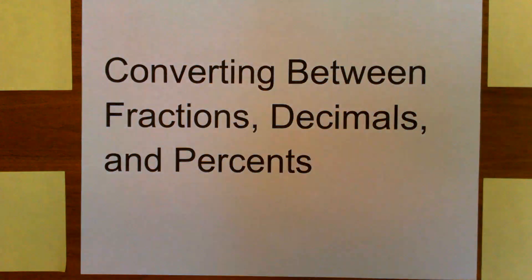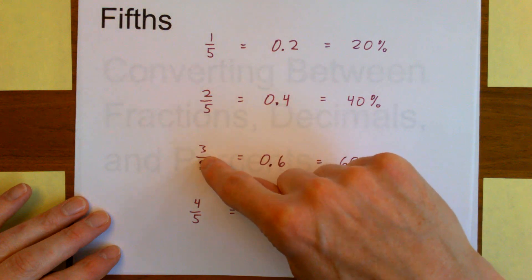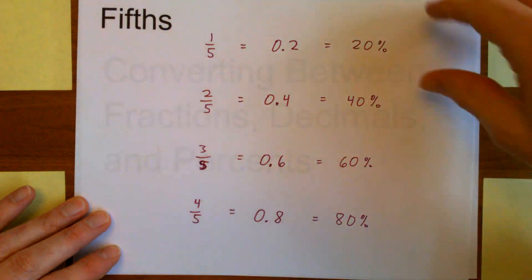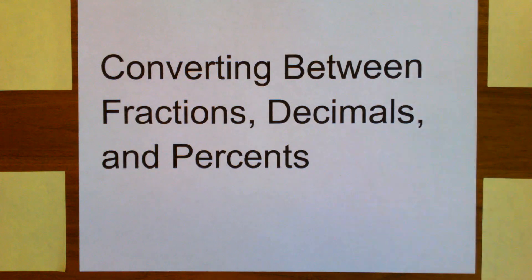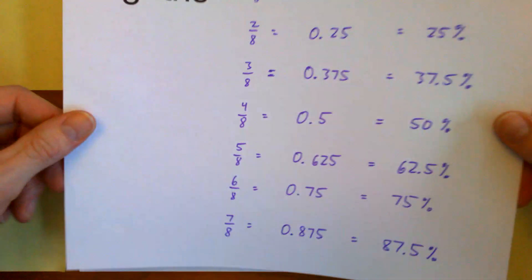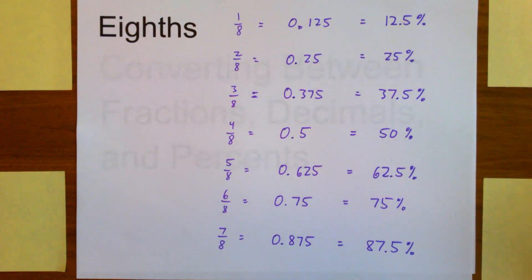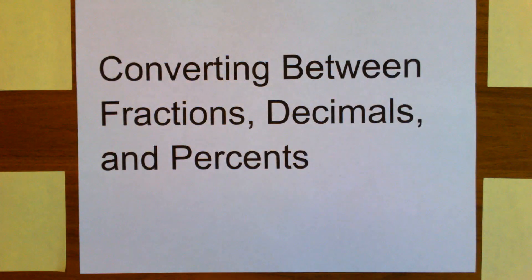Here they are for fifths: one-fifth, two-fifths, three-fifths, four-fifths — decimals and percent. Here they are for eighths. Again, you can pause, screenshot, or print if you want. And here they are for tenths.